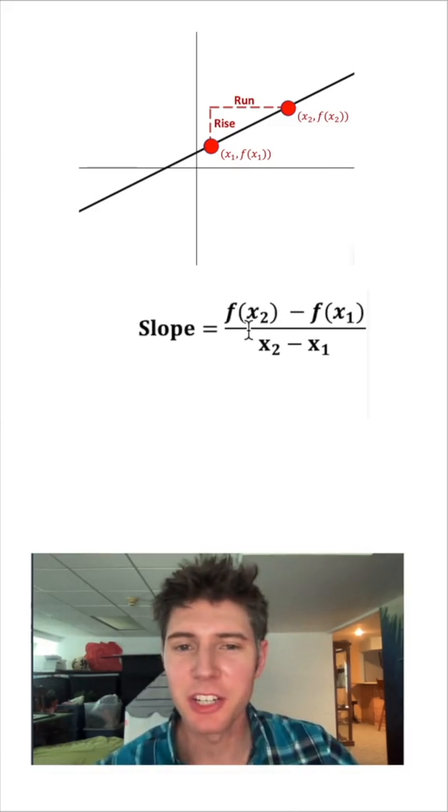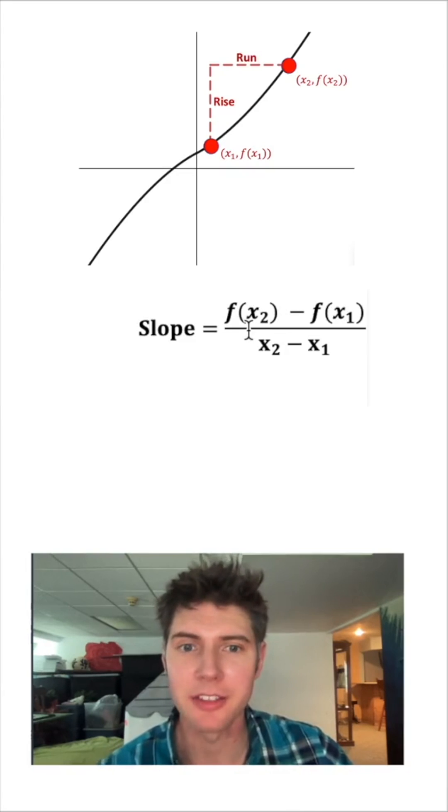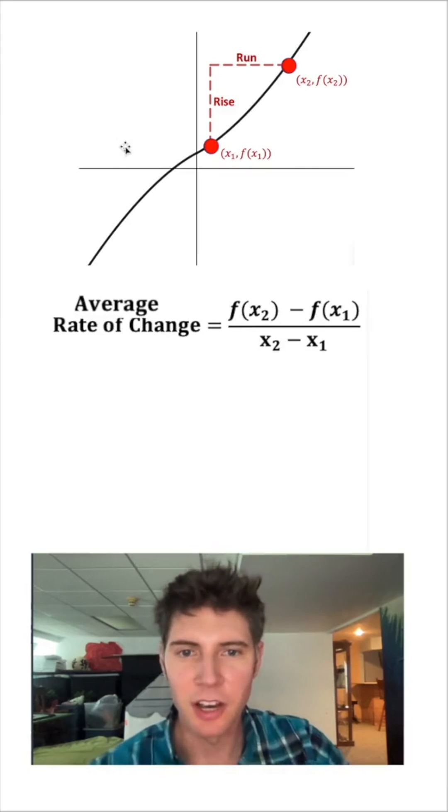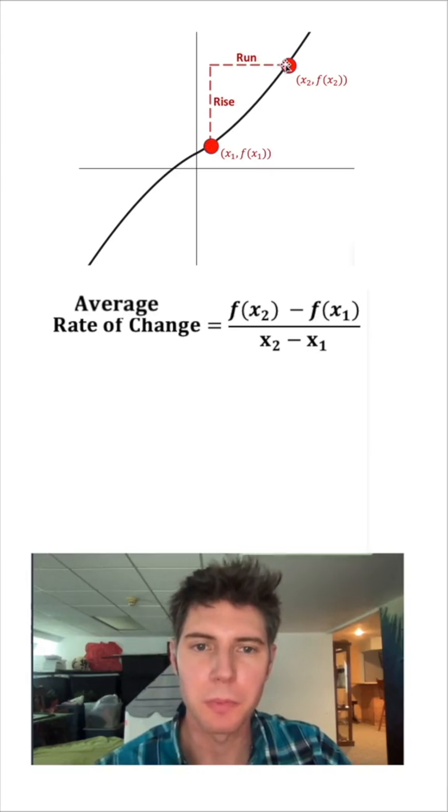The reason function notation is so helpful is we can now do things that aren't lines. And now that we're not dealing with straight lines anymore, it's no longer called a slope. It's an average rate of change. That's on average, how much do we change going from this point to this point?